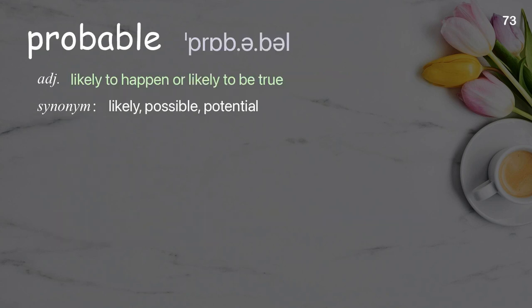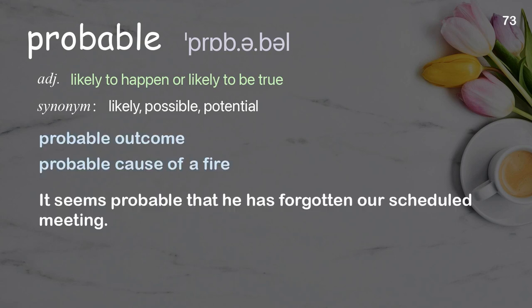Probable: Likely to happen or likely to be true. Examples: probable outcome, probable cause of a fire. It seems probable that he has forgotten our scheduled meeting.